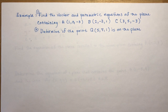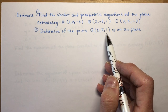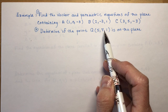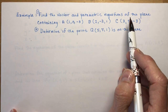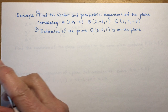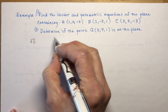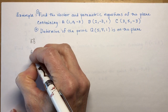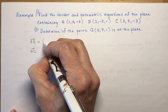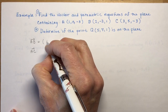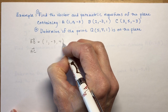Find the vector and parametric equations of the plane containing points A (1, 0, minus 3), B, and C. We have three points and no vectors, so we need to find two direction vectors. We'll do AB and AC. AB is B minus A: 2 minus 1 is 1, 1 minus 3 minus 0 is minus 3, and 1 minus minus 3 is 4. So AB is (1, minus 3, 4).